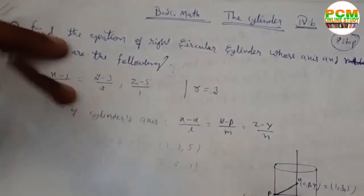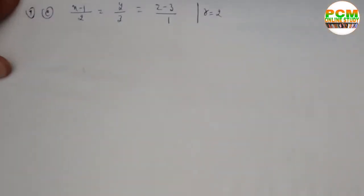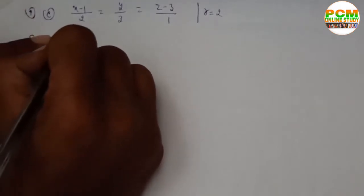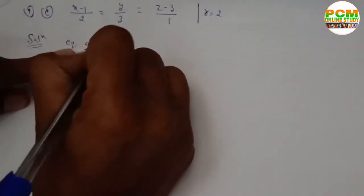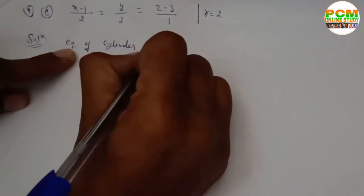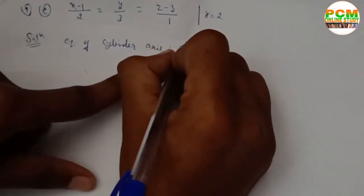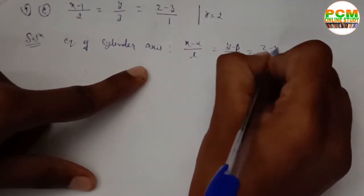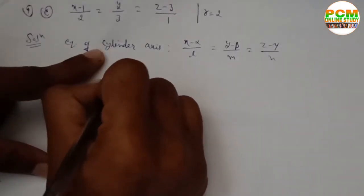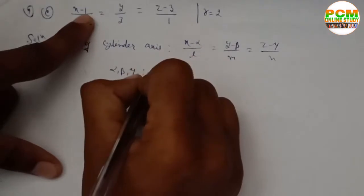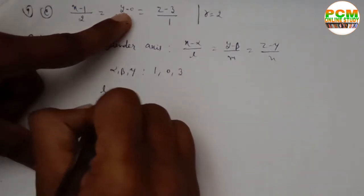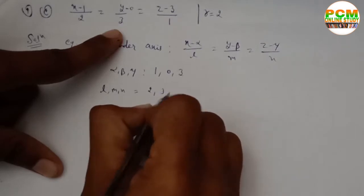We are given the equation of the cylinder's axis and its radius. The axis equation is (x−1)/2 = y/3 = (z−3)/1. Comparing with the standard form (x−α)/l = (y−β)/m = (z−γ)/n, we get α=1, β=0, γ=3 and l=2, m=3, n=1.